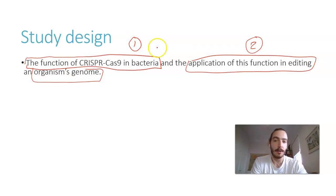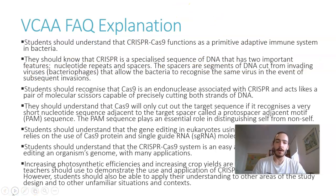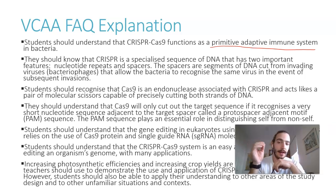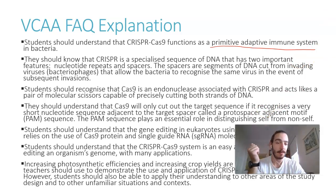You have to know why CRISPR exists in the first place and then how we end up using it. Students should understand that CRISPR-Cas9 functions as a primitive adaptive immune system in bacteria. What I'm going to get you to do is pause the video here and read through these points, because I'm going to be covering these during the video. Pause, read through the points, and make sure you feel at least comfortable knowing what these basic points are about.